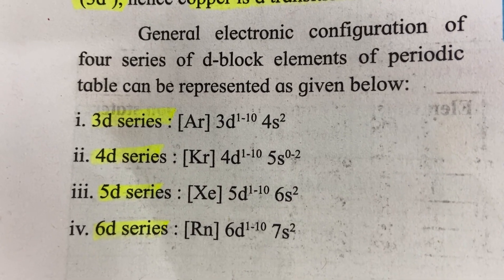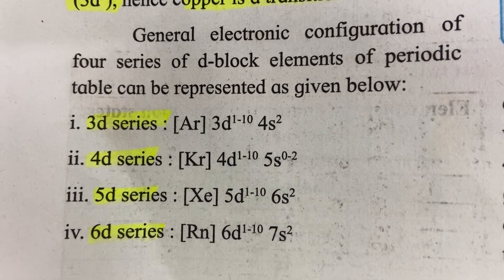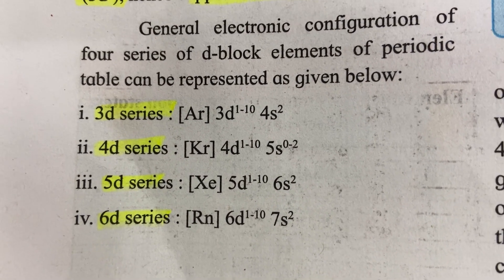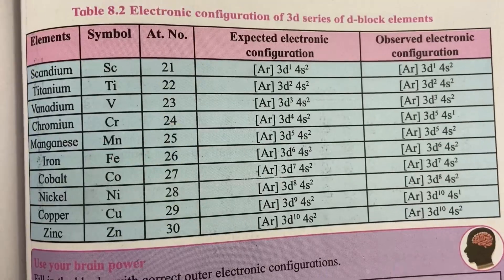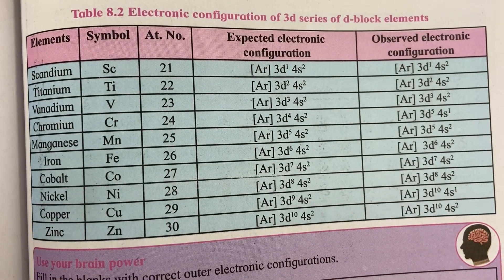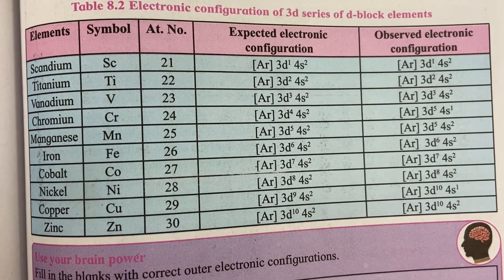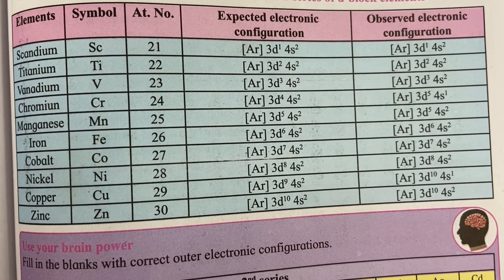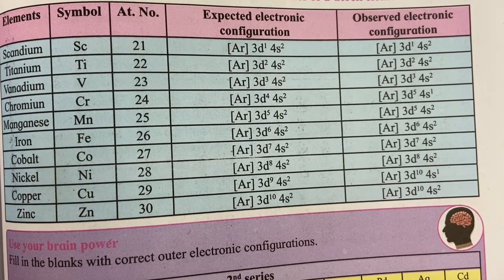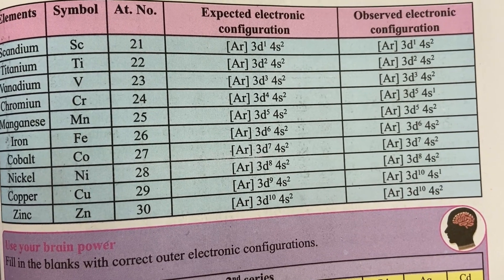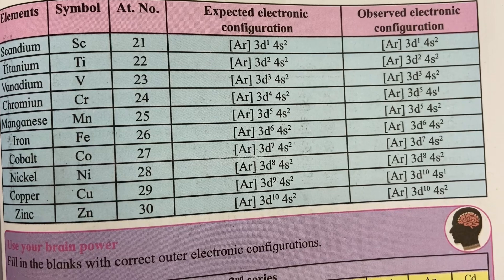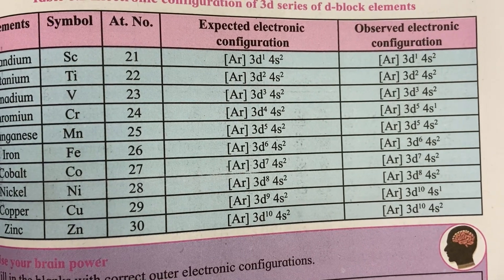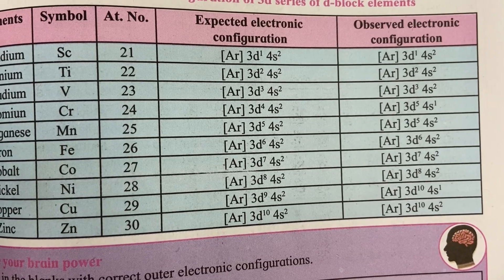You should remember the general electronic configurations of the 3d series, 4d series, 5d series, and 6d series. The first series (3d) consists of elements from scandium to zinc, atomic numbers 21 to 30. There are two types of electronic configurations: one is expected and the second is observed.